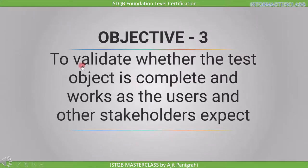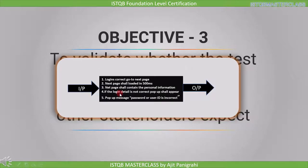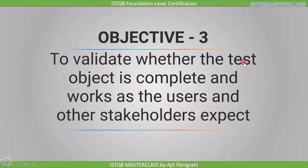The third objective is to validate whether the test object is complete and works as the user and other stakeholders expect. The test object is defined as the component or system to be tested. When you are in the requirement stage, the requirement is your test object; in the design stage, the design is your test object; and at the implementation stage, the code is your test object. As per this objective, we provide input to the test object and check the output to see if it fulfills the stakeholders' requirement. Since we are executing the code, this comes under validation.